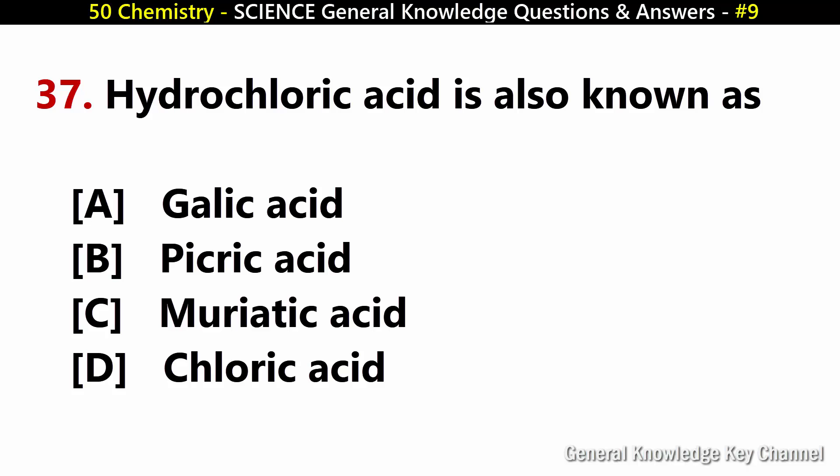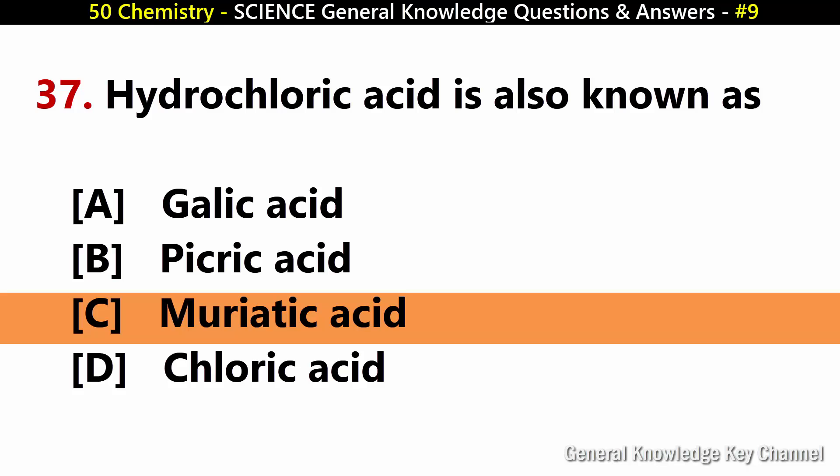Hydrochloric acid is also known as? Answer C: Muriatic acid.